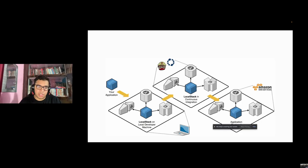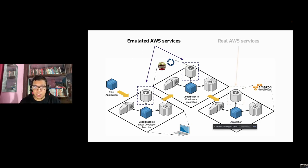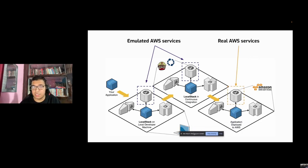This is the bird's eye view of LocalStack. We generally recommend folks to use LocalStack on local developer machines and in continuous integration, where it finds the best use case. You test your application locally, develop and debug it, push commits to a CI environment — which also uses LocalStack for testing — before pushing to production, where your application will be accessed by real users.